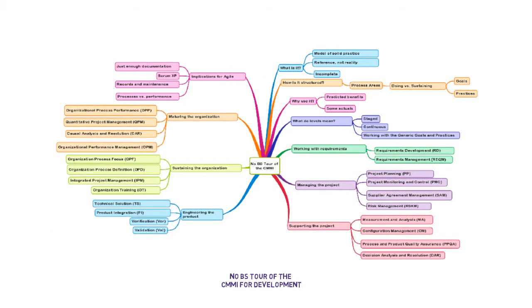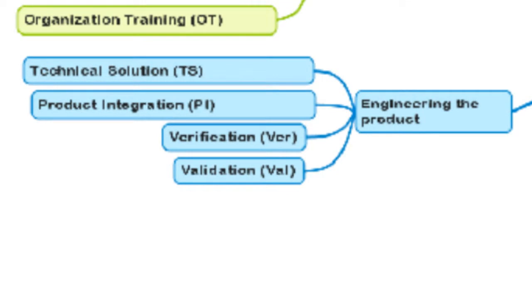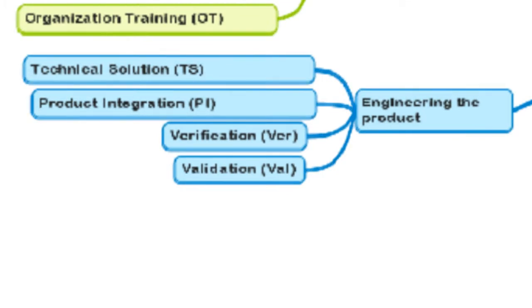In this segment, we'll look at the engineering process areas as windows into completing our engineering tasks. They involve developing the technical solution to the customer need, integrating the product prior to ship, making sure that the requirements are satisfied, and also that the product will perform as intended in the customer environment.